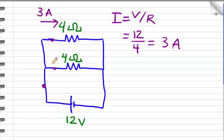Now, the calculation for this branch would be the same. To find the current coming out of the battery, I can just add 3 amps plus 3 amps equals 6 amps. So right here and right here there'd be 6 amps of current.